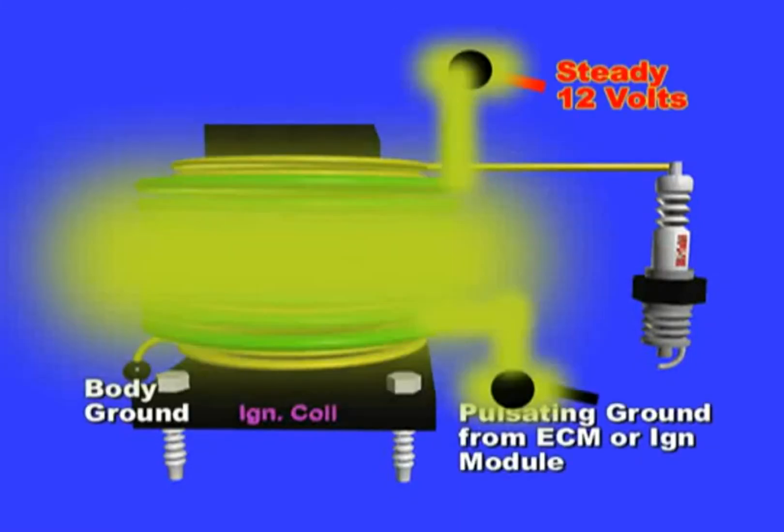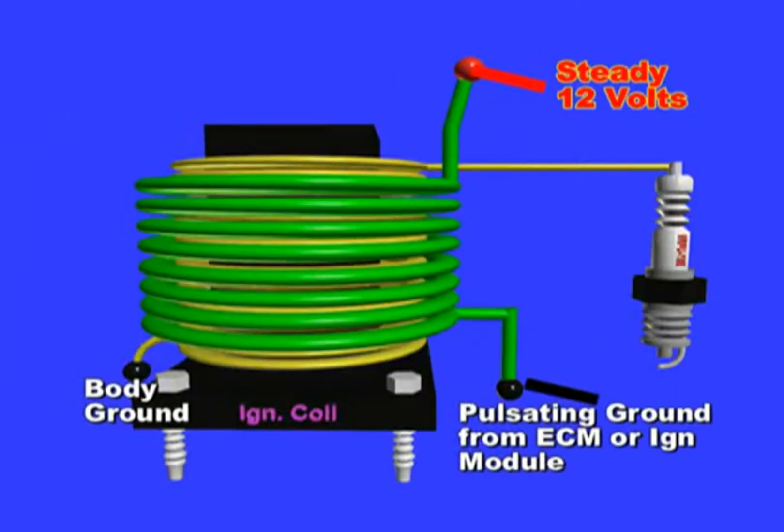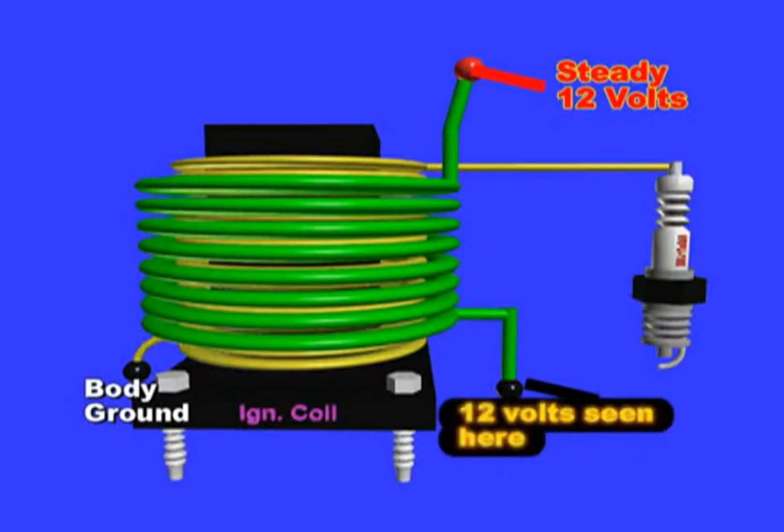If this voltage is missing, the ECM issues an open or low circuit OBD2 code. This could be due to a loose connector, broken wire, blown 12 volt ignition fuse, or a defective coil itself. The ECM or respective module needs to see this 12 volts at all times.